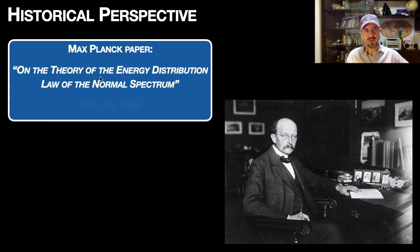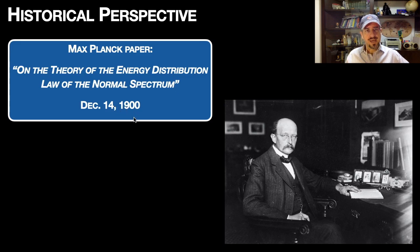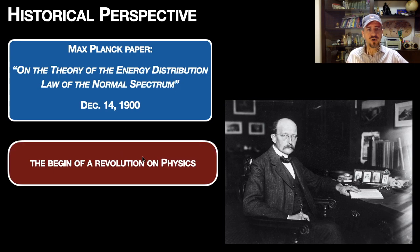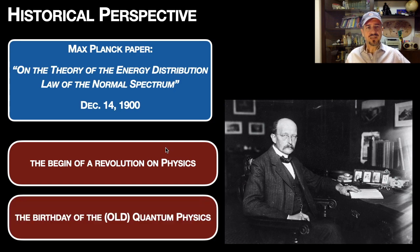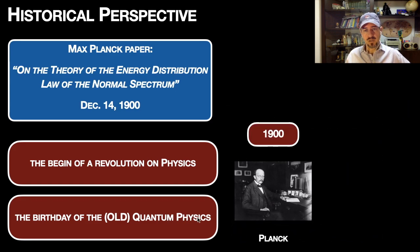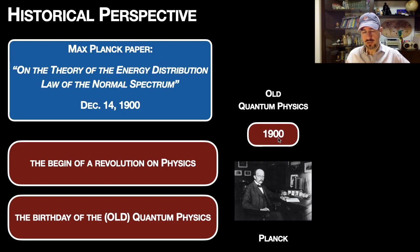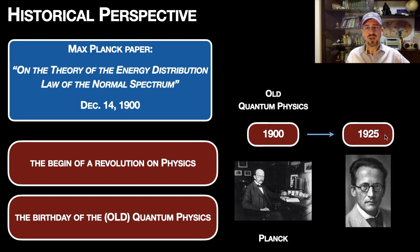The explanation came with the quantization proposed by Planck, who explained the ultraviolet catastrophe — that is, the failure of the classical prediction. On the paper 'On the Theory of the Energy Distribution Law of the Normal Spectrum', published December 14th, 1900, he proposed quantization and could explain the thermal radiation issue. This was the beginning of a revolution in physics — the birthday of quantum physics, or what we call the old quantum physics.